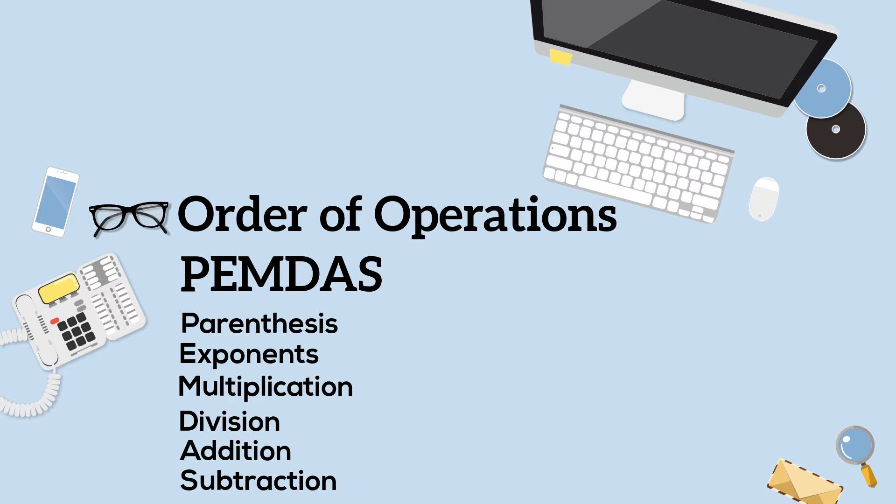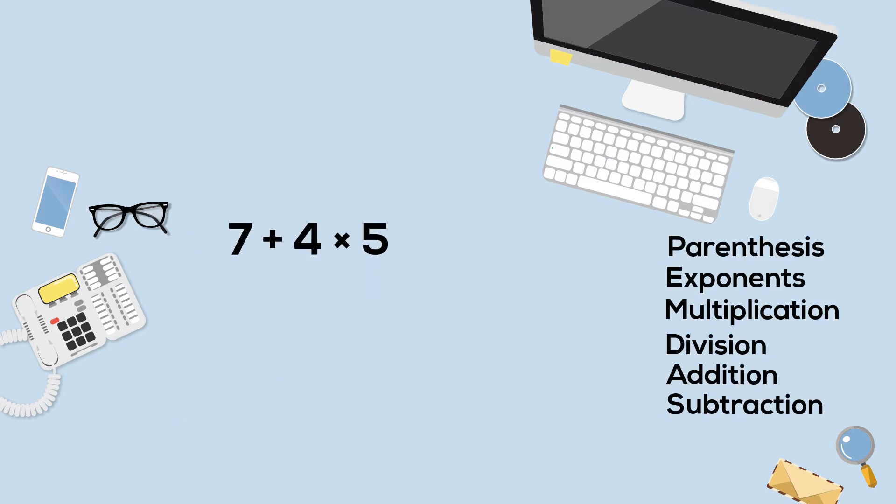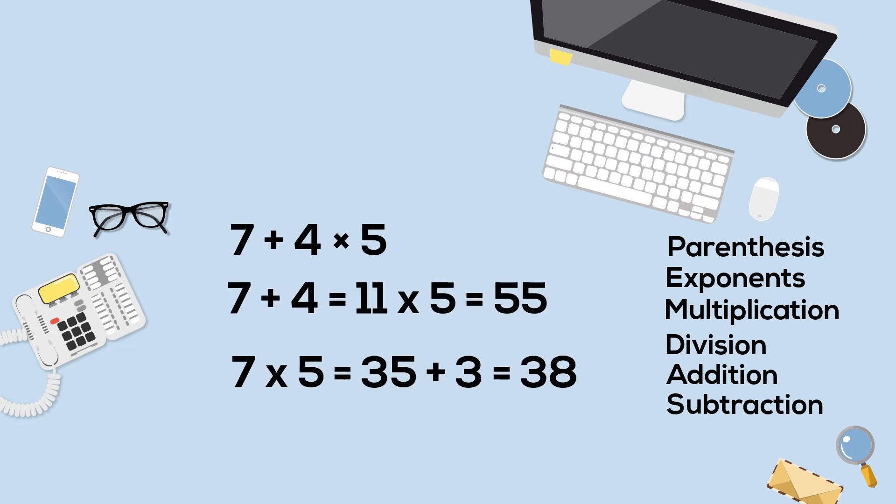So let's look at an example and see if they follow the correct order of operations. Let's get started with 7 plus 4 times 5. Which answer is correct, 55 or 38? If you go straight from left to right, you go 7 plus 4 equals 11 times 5 equals 55.